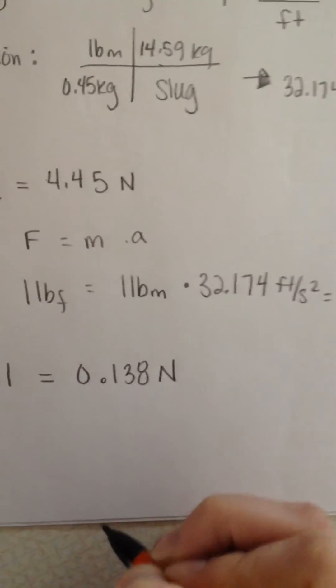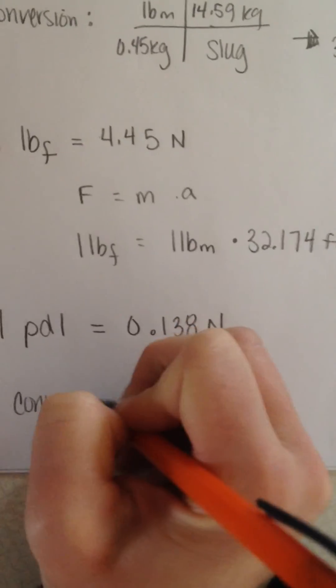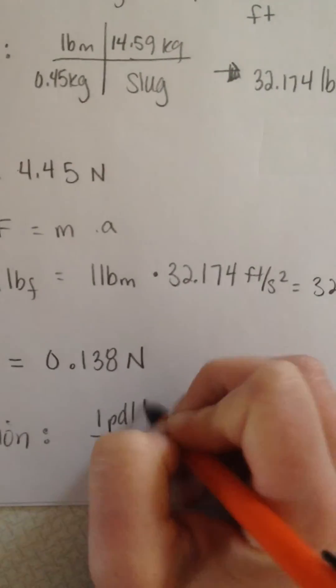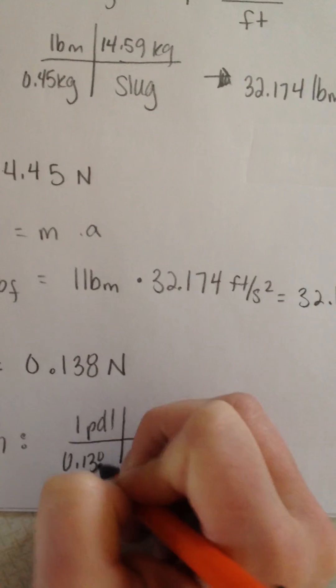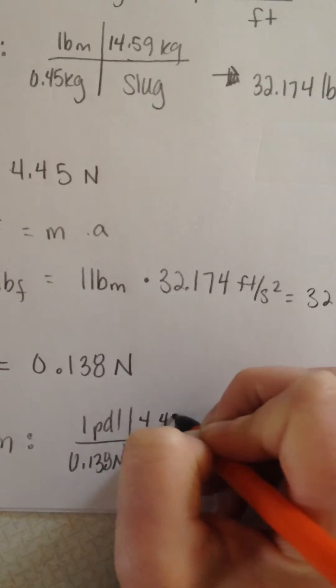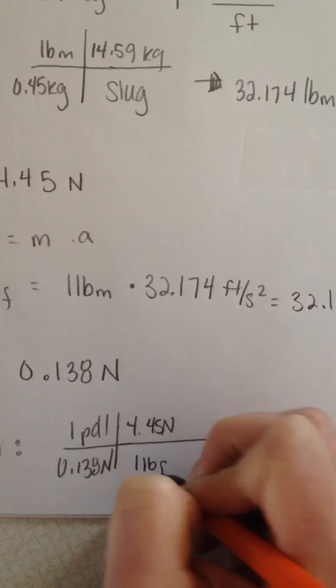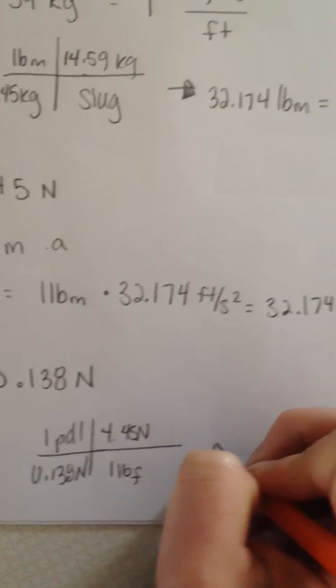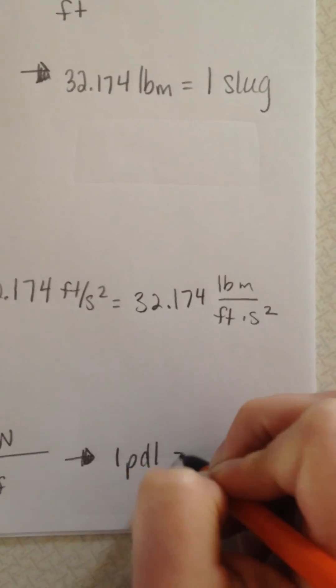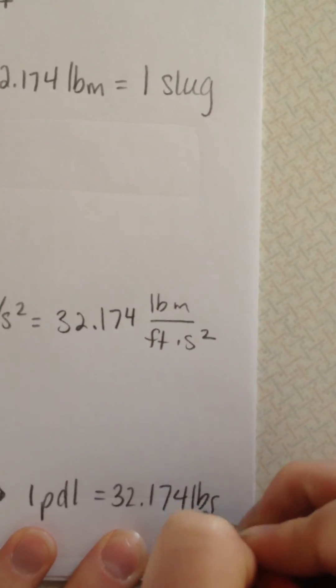When we do a conversion between pound force and poundal, we get one poundal is equivalent to 0.138 newtons and 4.45 newtons is equivalent to one pound force, which shows us that one pound force equals 32.174 poundals.